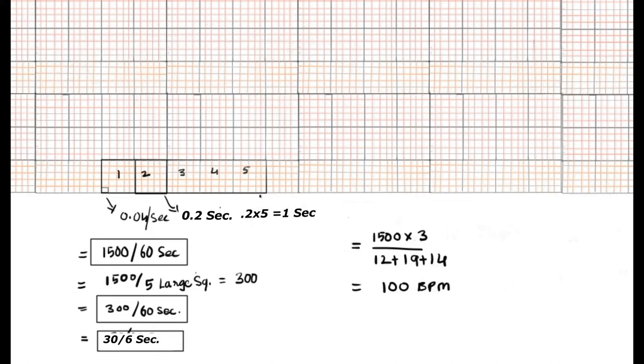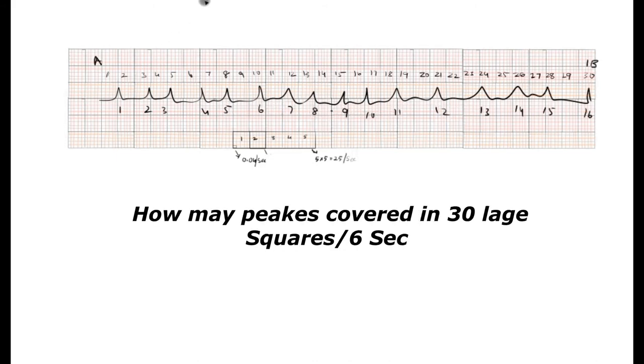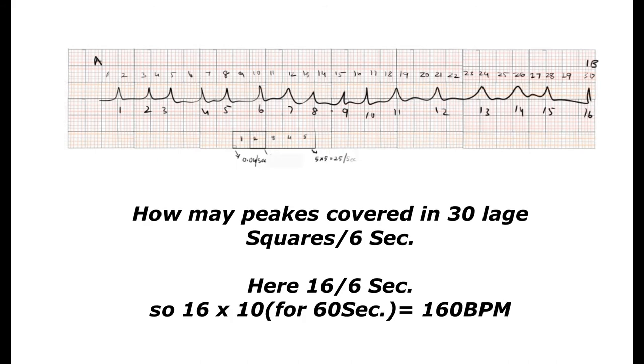If you don't know the exact pattern of heart rate and rhythm and it's very irregular, count 30 large squares and determine how many peaks—whether positive or negative—are covered in those 30 large squares, which equals 6 seconds.